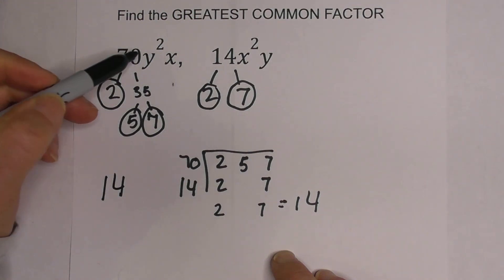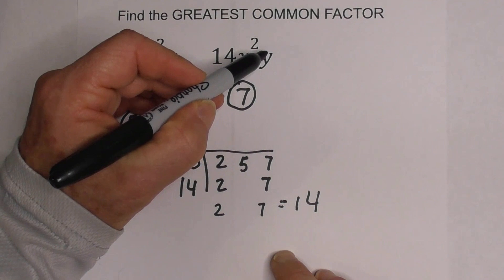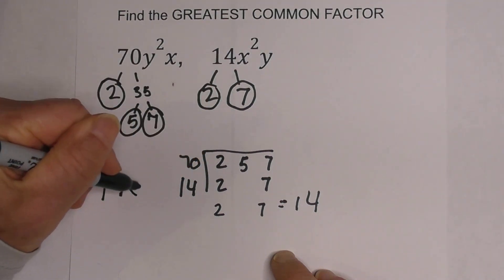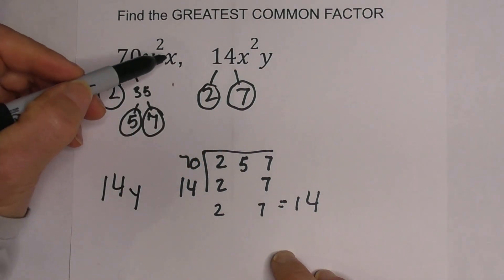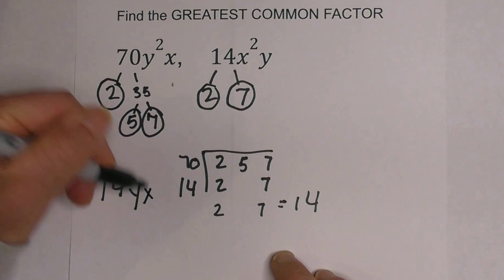Now let's look at y squared. Well I have a y squared here but not a y squared there, but I have a y so I can use y. And then I have an x and an x squared. So I don't have an x squared in both but I do have an x so I'll write the x.